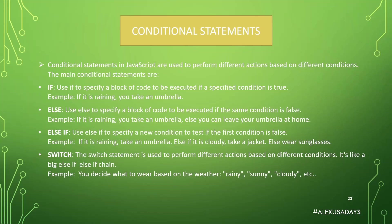The main conditional statements are: `if` — which you've already seen in the previous lesson. Use `if` to specify a block of code to be executed if a specified condition is true. For example, if it is raining, you take an umbrella. The second one is `else` — use `else` to specify a block of code to be executed if the same condition is false.